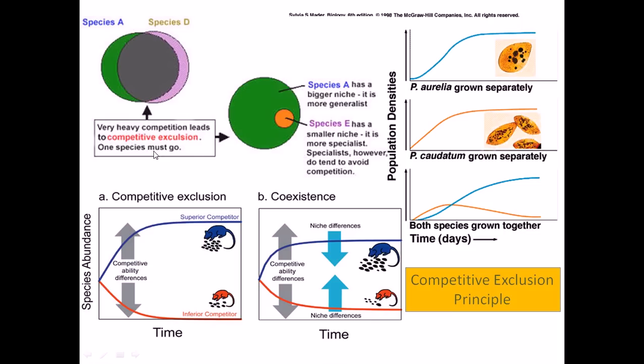In a very simplified version, complete competition cannot exist because if there is a huge amount of competition between two species, one of that species definitely will rule and another species will be extinct from that environmental situation. So that is the basic concept.